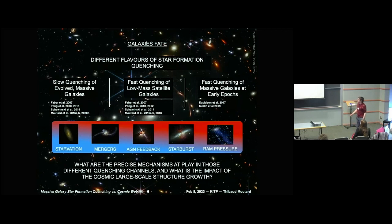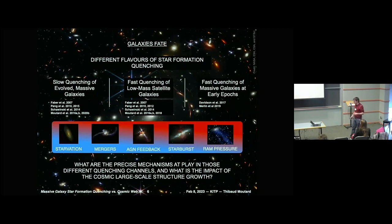The quenching I want to talk about today is slow quenching of massive galaxies — also called fading or starvation. Galaxies that reach high mass will slowly quench or stop forming stars. There are different processes you can invoke for that, and we will try to see which ones could be at play.